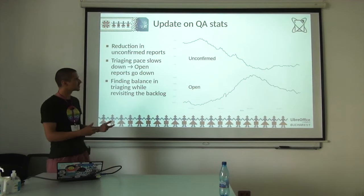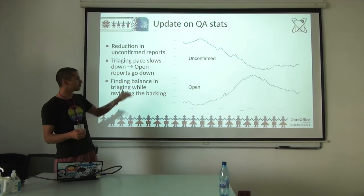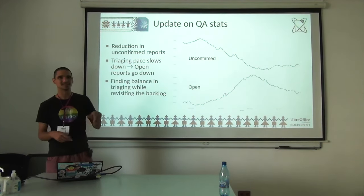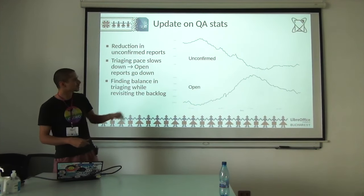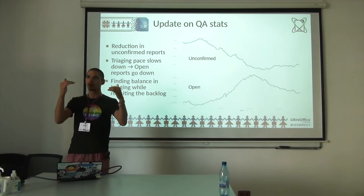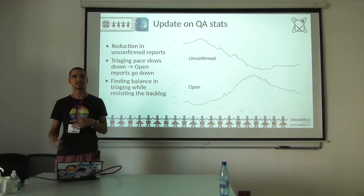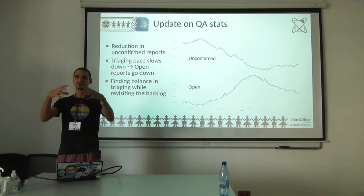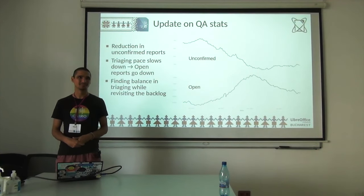It makes me think that we have to keep working at finding a balance between triaging while revisiting the very large backlog that we have. Those graphs might be a bit of a data science crime — we're removing the zero on there — but we're looking at trends here, and what I'd love to see is that number of unconfirmed reports going down, as well as the number of open reports, fixing things at the same time as we're triaging, getting that volume to a more manageable size.